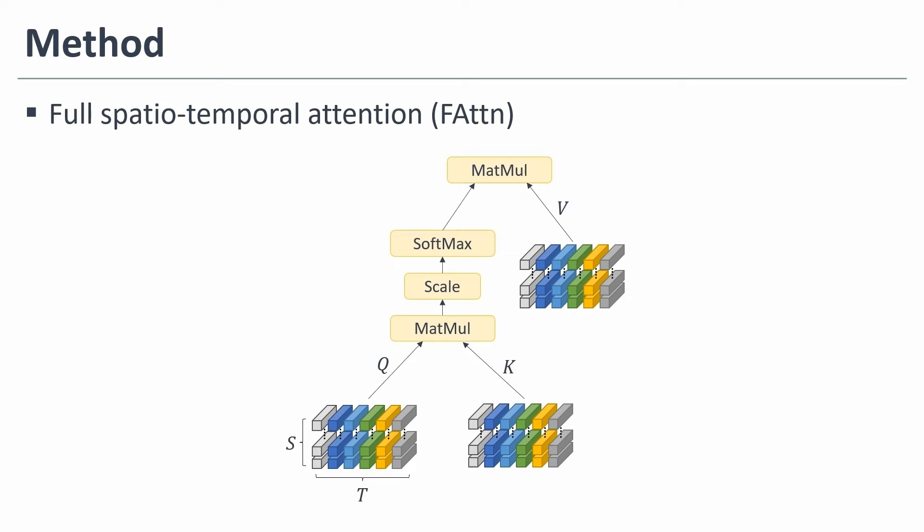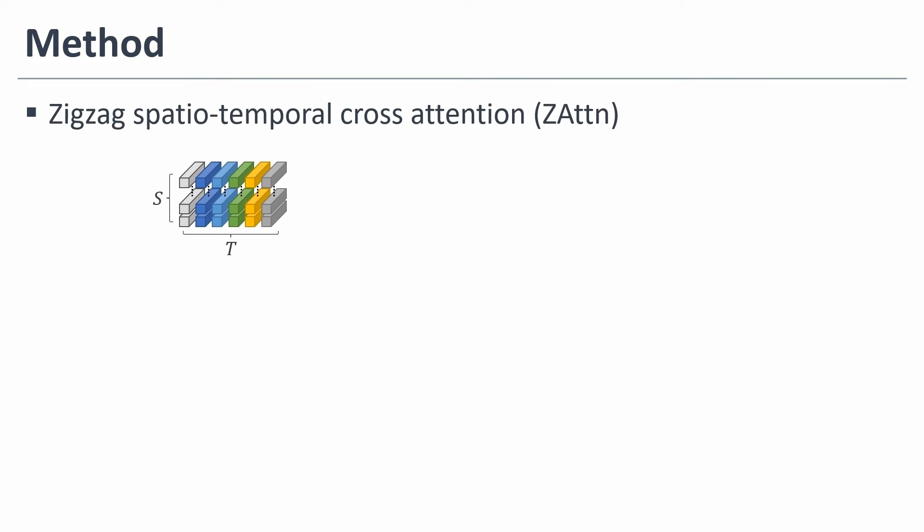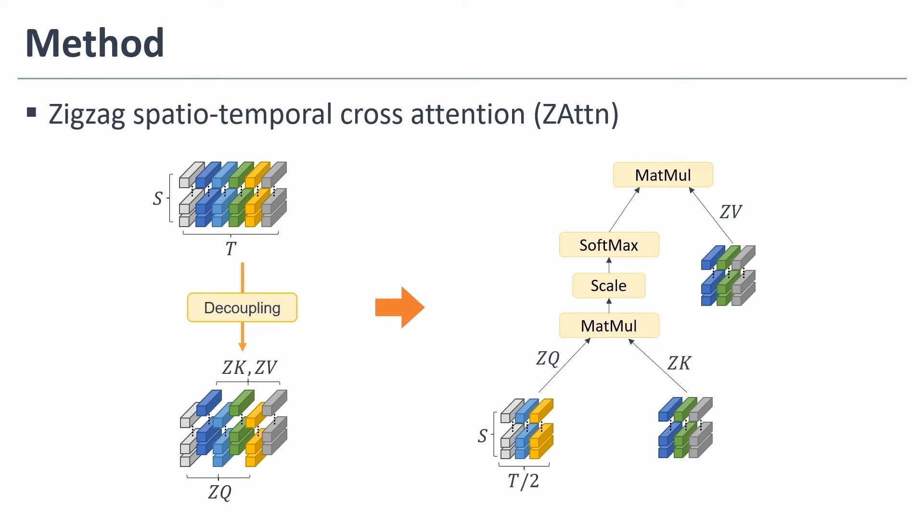Full attention is a self-attention mechanism utilizing the full spatial-temporal tokens. Zigzag attention splits tokens temporally in a zigzag pattern, and cross-attention is performed using the decoupled tokens to generate the output. Zigzag attention can learn the relationship between small changes in actions.